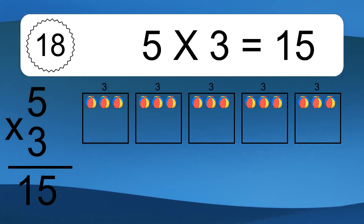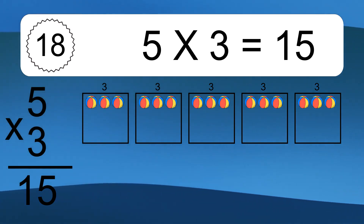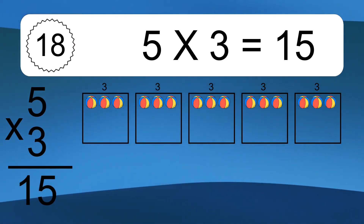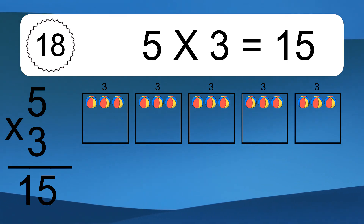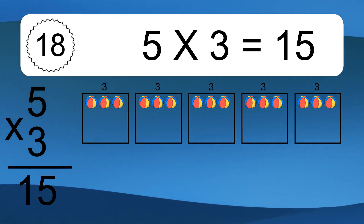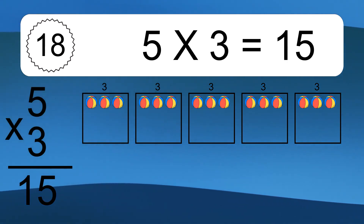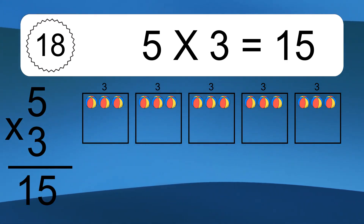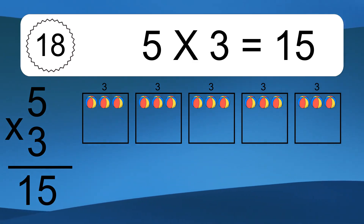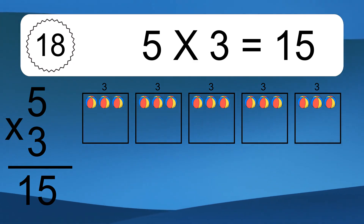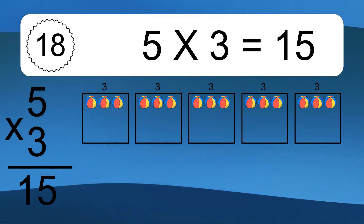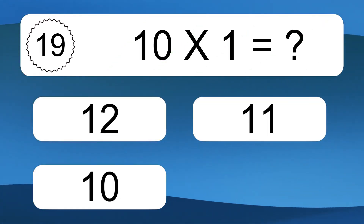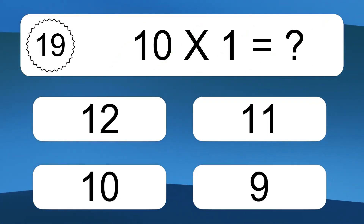5 times 3 equals 15. We have 5 boxes and each box has 3 colorful balls inside. If you count all the balls in all the boxes together, you will have 5 times 3 balls. This equals 15 balls.